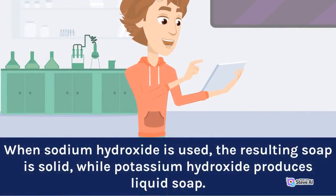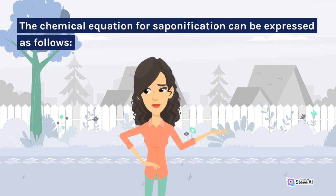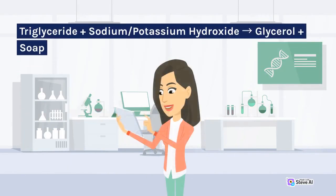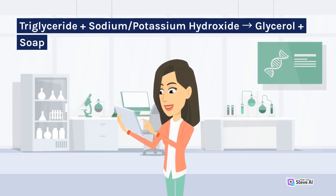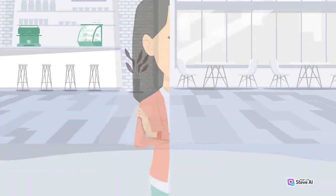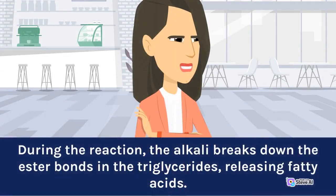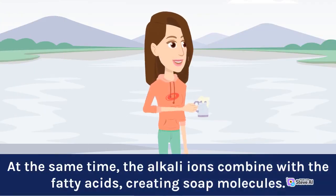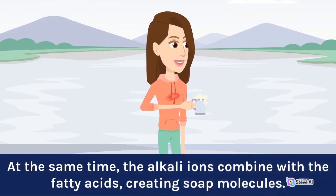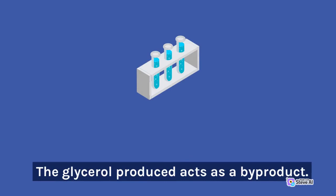When sodium hydroxide is used, the resulting soap is solid, while potassium hydroxide produces liquid soap. The chemical equation for saponification can be expressed as follows: triglyceride plus sodium/potassium hydroxide yields glycerol plus soap. During the reaction, the alkali breaks down the ester bonds in the triglycerides, releasing fatty acids. The alkali ions then combine with the fatty acids, creating soap molecules. The glycerol produced acts as a byproduct.